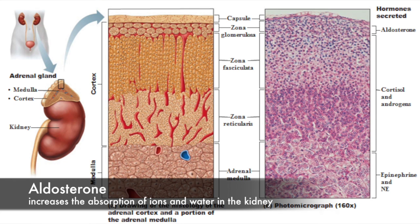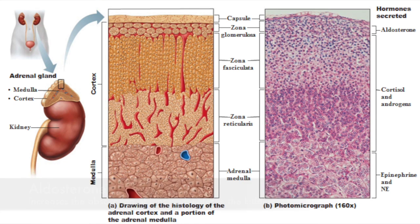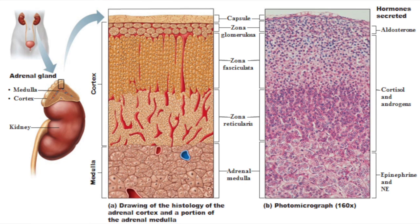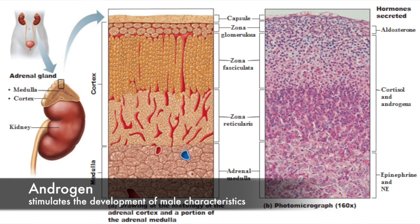The zona glomerulosa secretes mineralocorticoids such as aldosterone, which act on the kidney to increase sodium and water retention. The zona fasciculata secretes glucocorticoids such as cortisol, which act on many tissues and are seen in responses to stress and the reduction of inflammation.